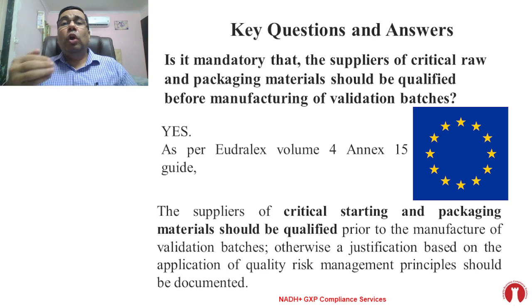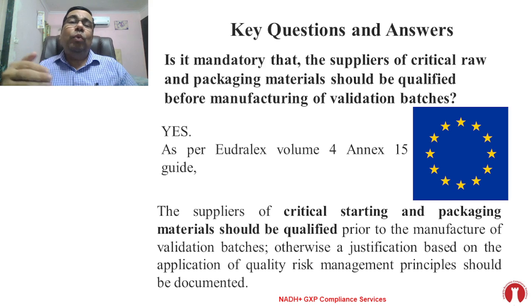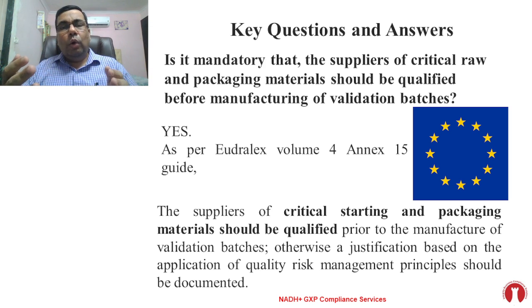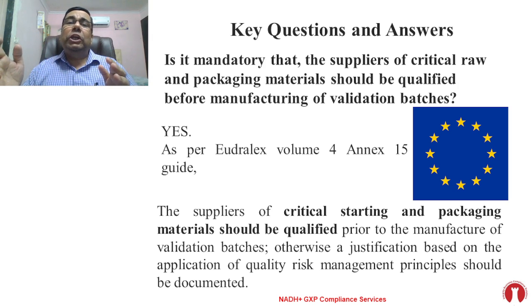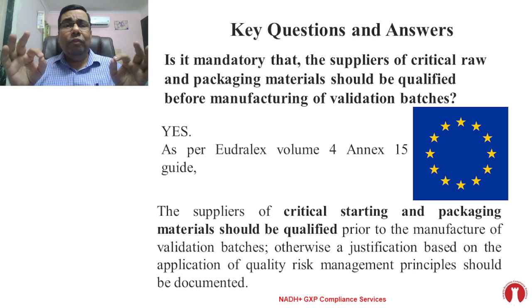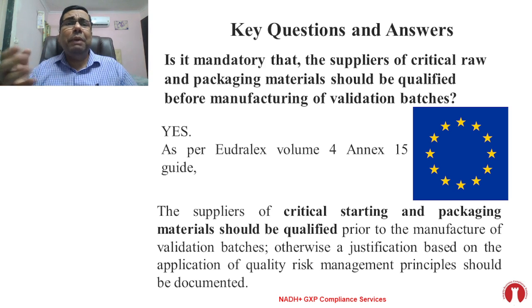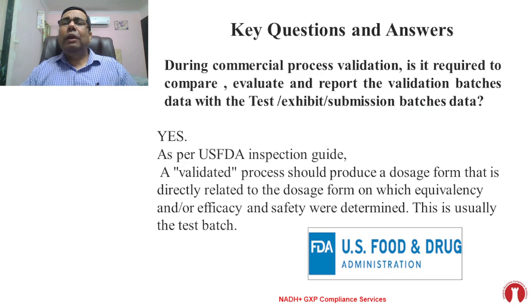If the supplier is not qualified, you need to have a justification, and that justification should be based on quality risk management. There is no provision for a provisional vendor or provisional supplier. The vendor should be qualified as per your procedure and SOP. This is the expectation: whenever you are performing validation, critical raw materials and packaging materials must come from qualified suppliers before validation batch manufacturing. This is a very clear answer from EU GMP, and PICS guideline has the same expectation.